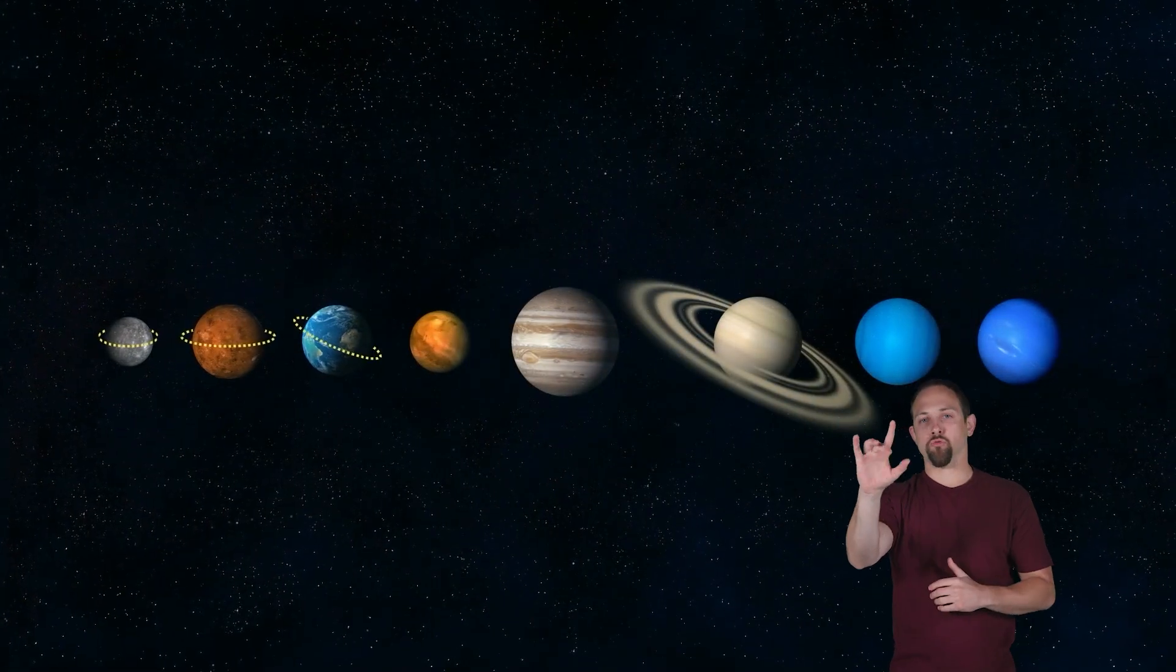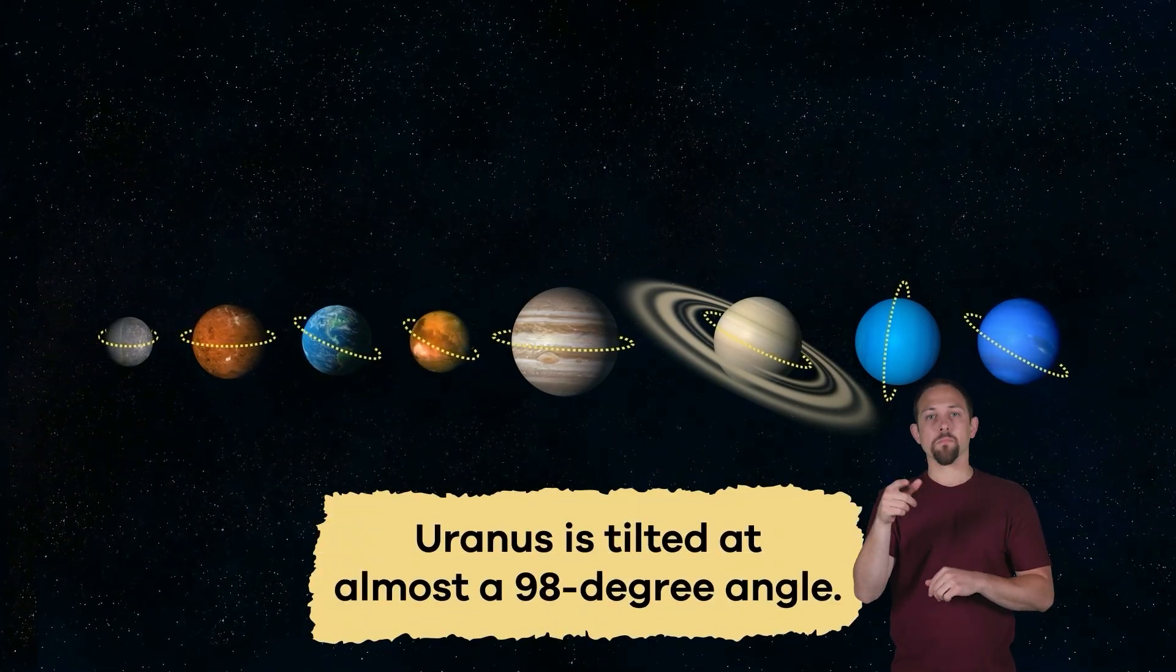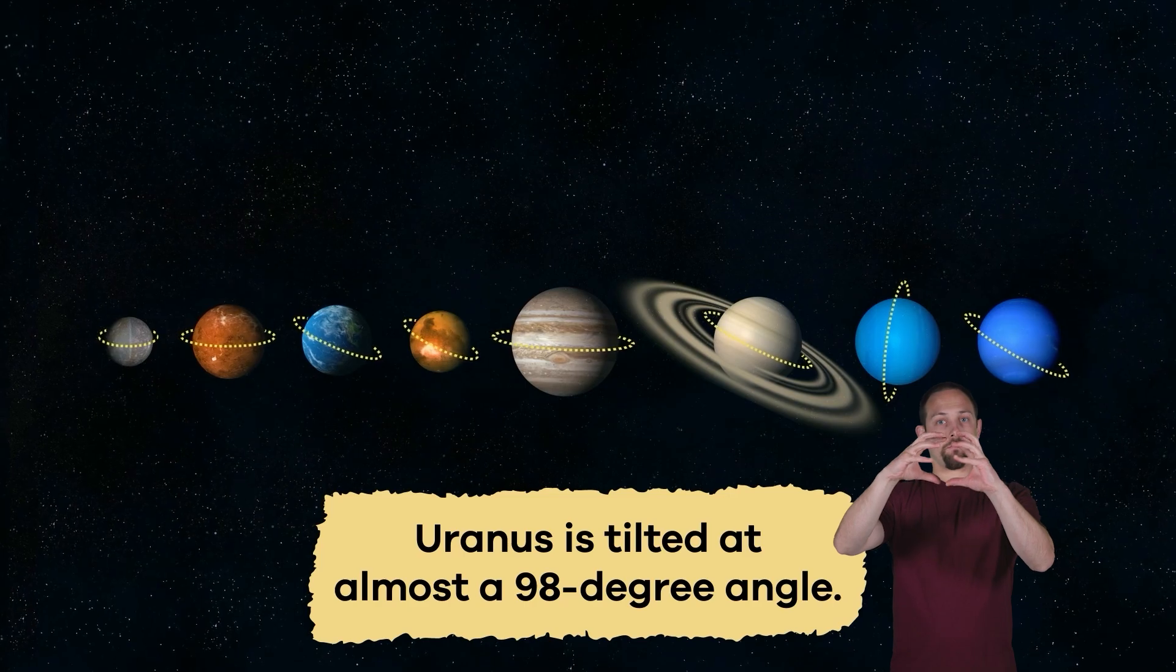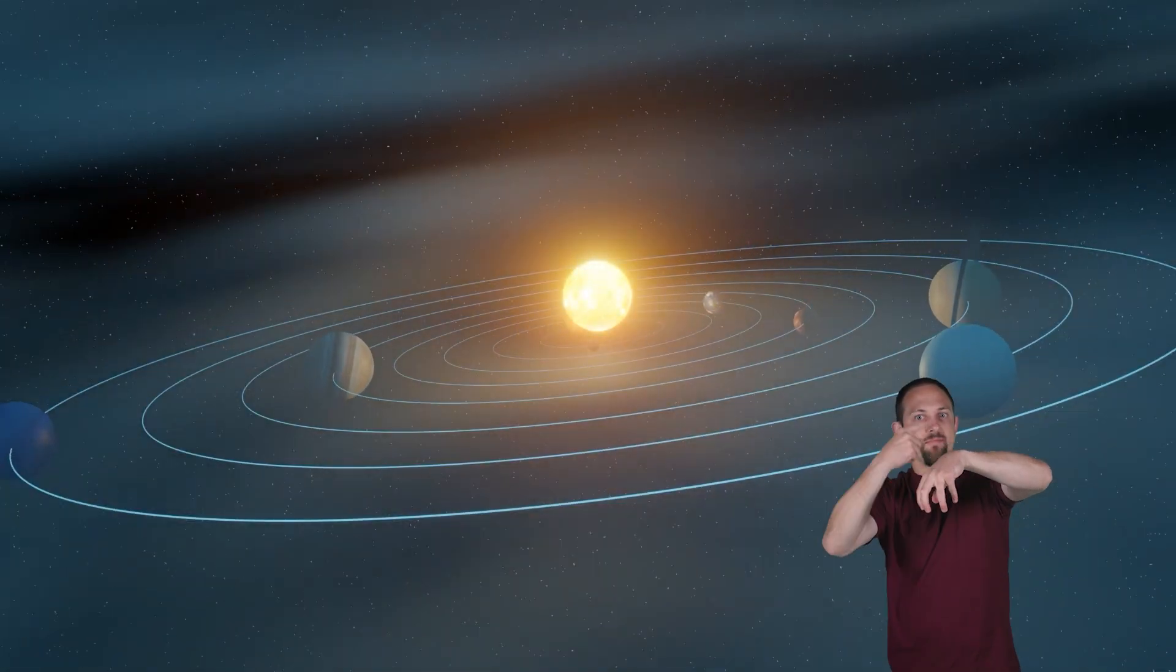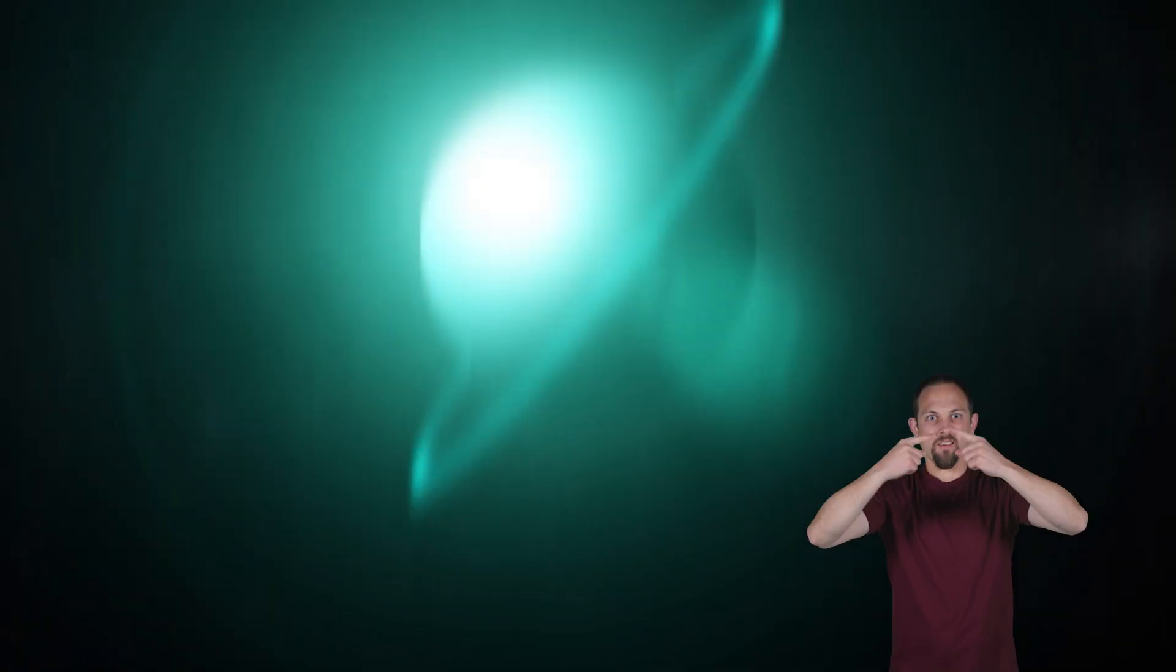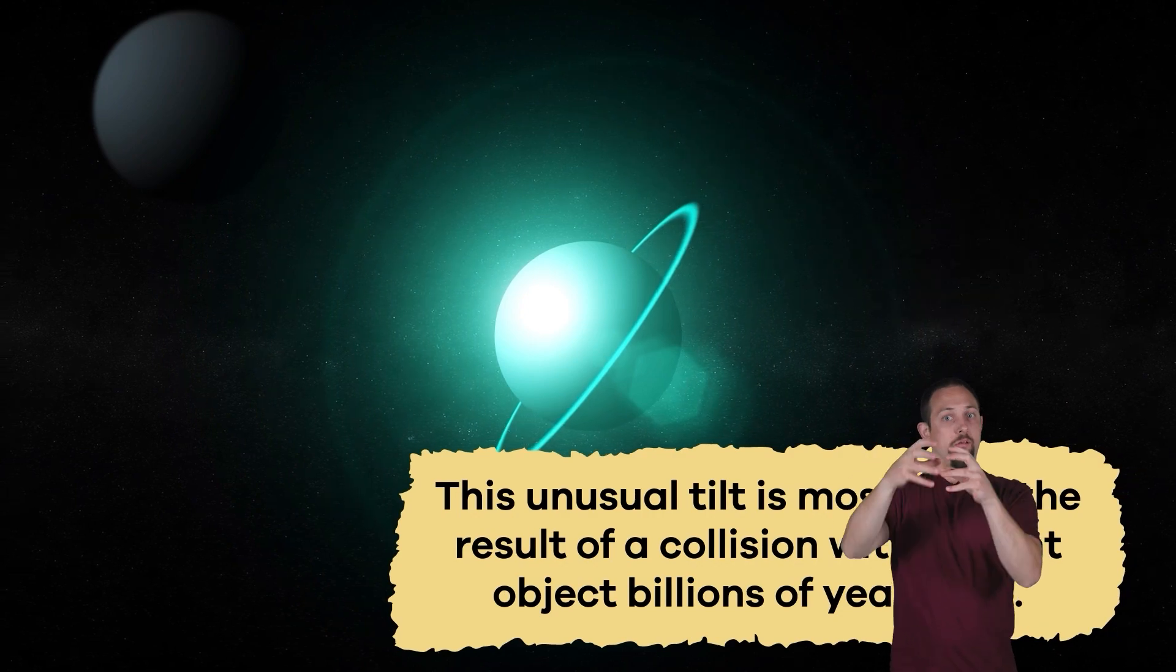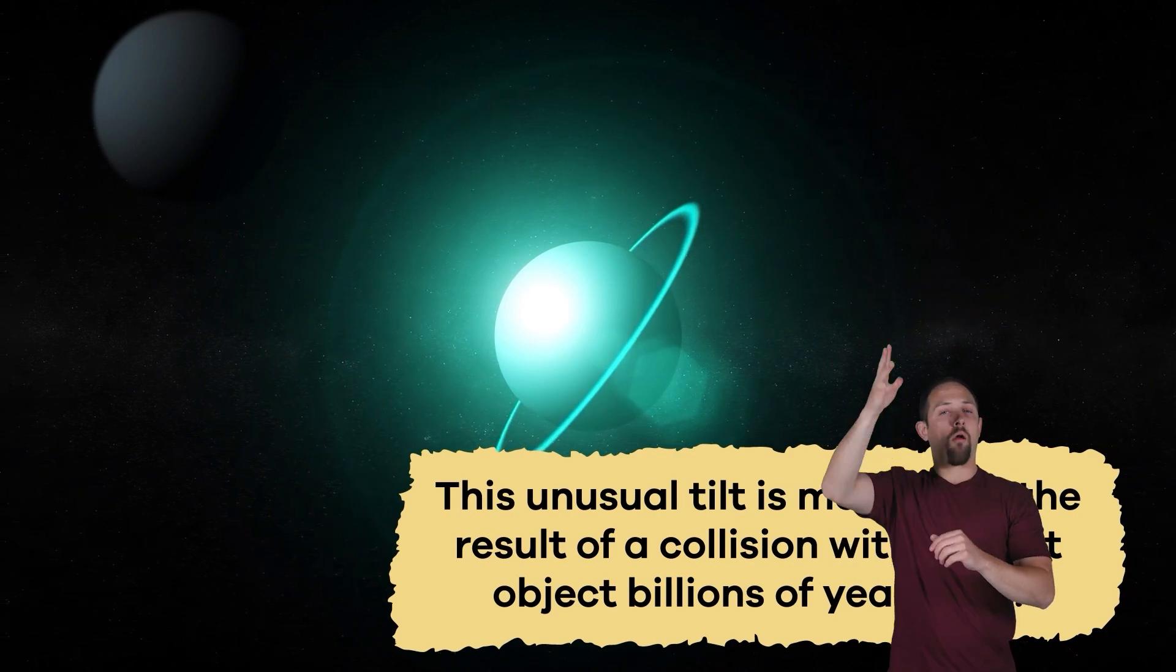Unlike the other planets in our solar system, which spin mostly upright, Uranus is tilted at almost a 98-degree angle. Its axis is so tilted, it rolls around the Sun on its side, kind of like a barrel. This unusual tilt is most likely the result of a collision with a giant object billions of years ago.